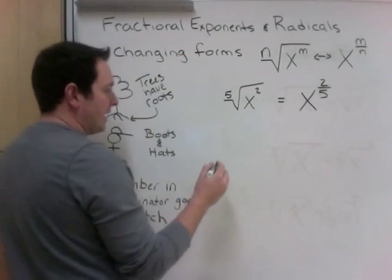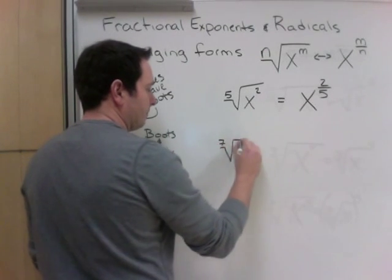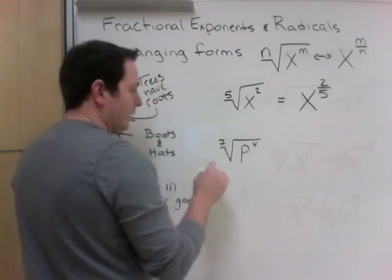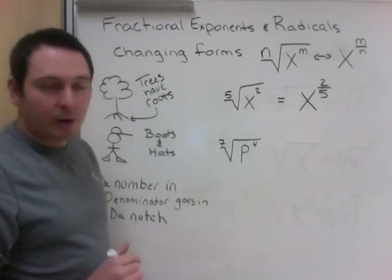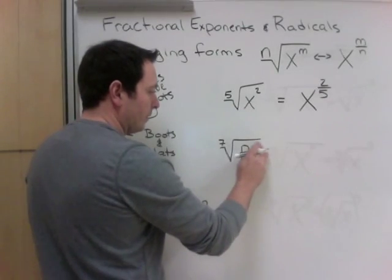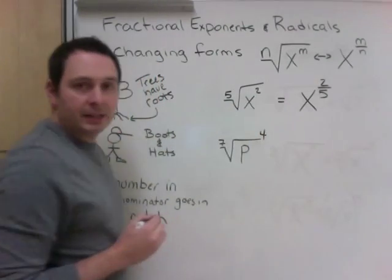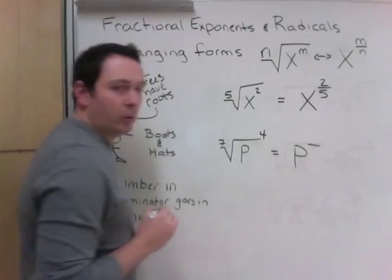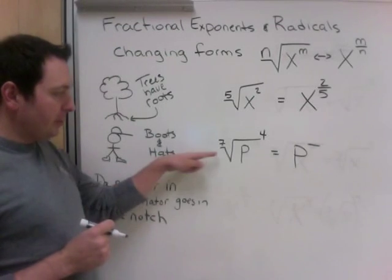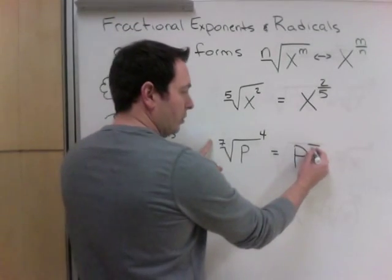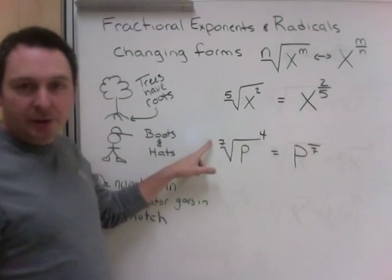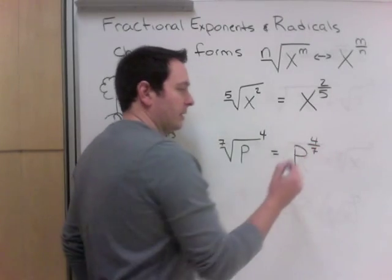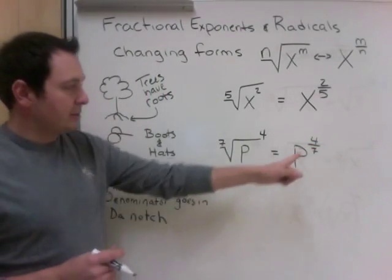For boots and hats: the seventh root of p to the power of 4 — and remember, that 4 could be outside the root; it doesn't matter. Writing this in exponent form: you leave your boots at the door, boots are on the bottom, and the hat goes up on the rack. So we get p to the power of 4 sevenths.